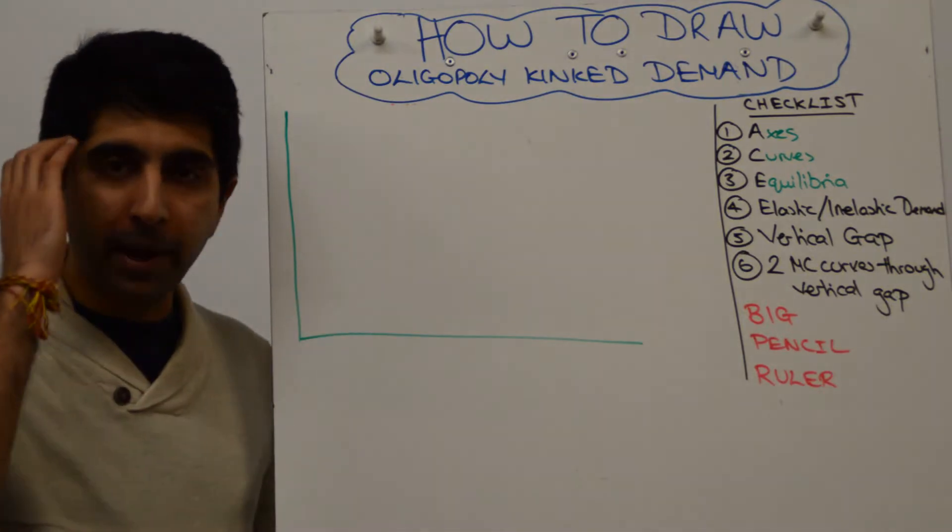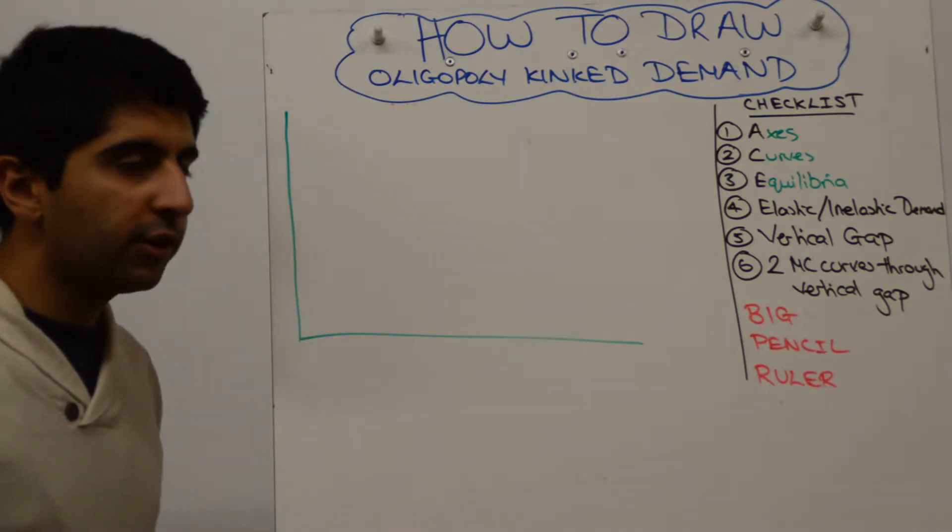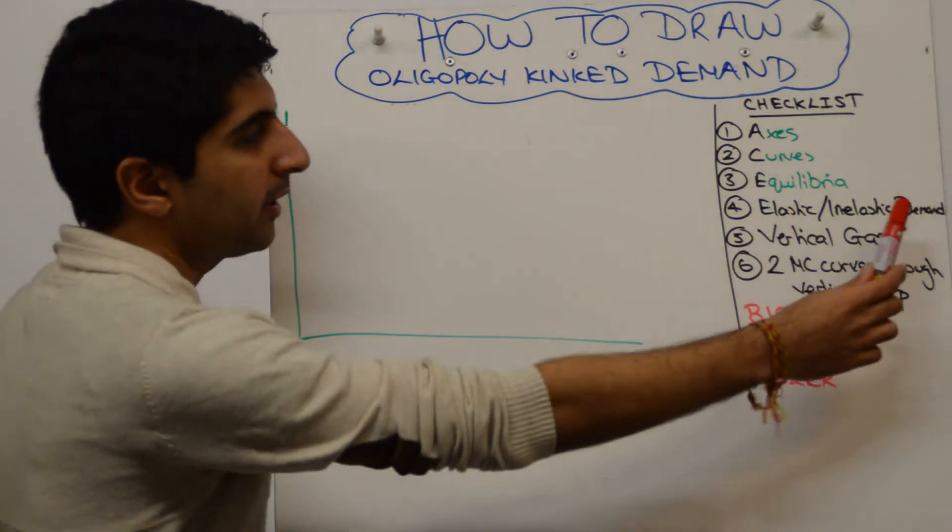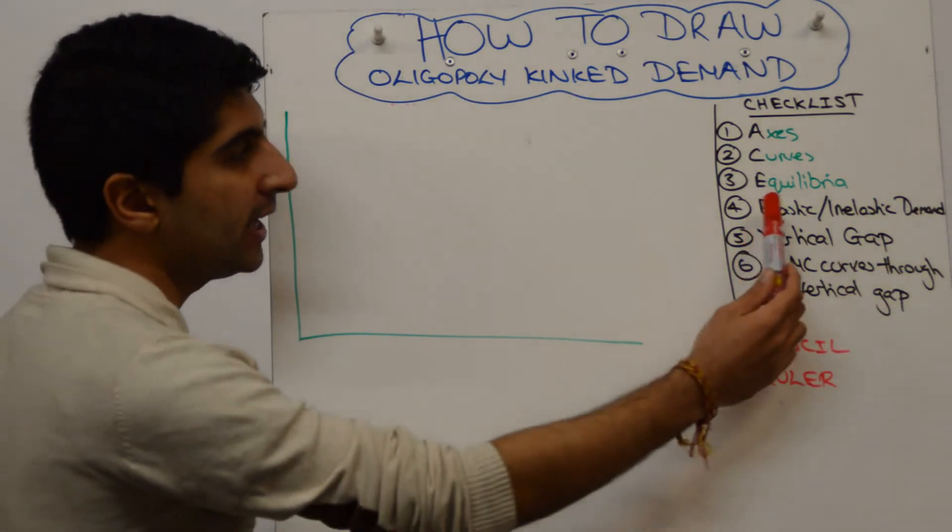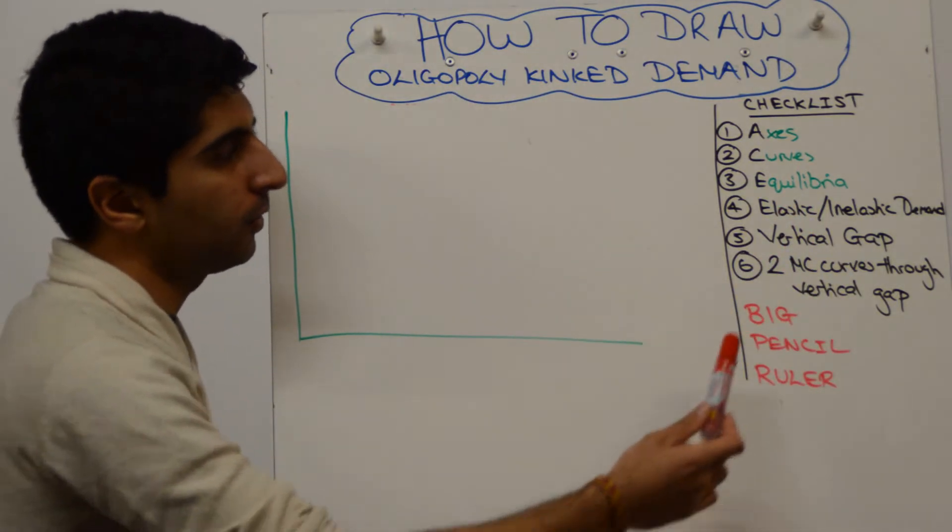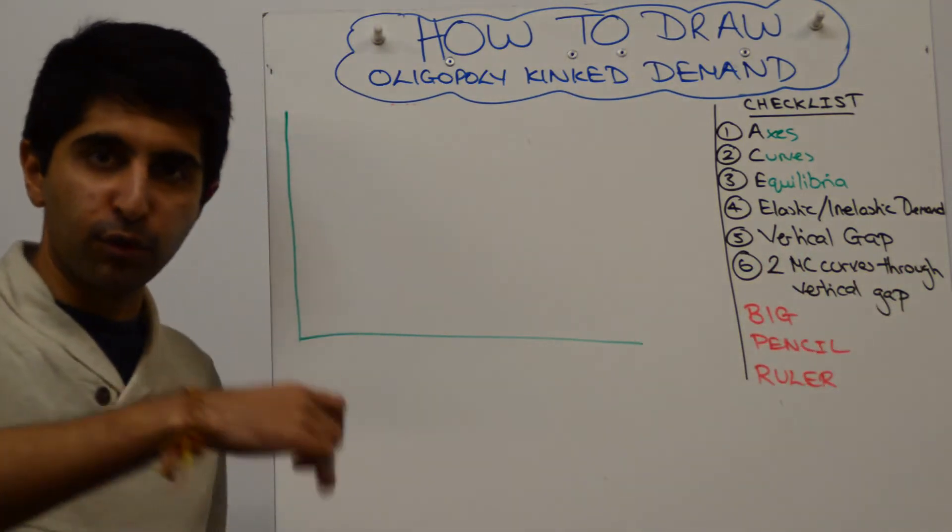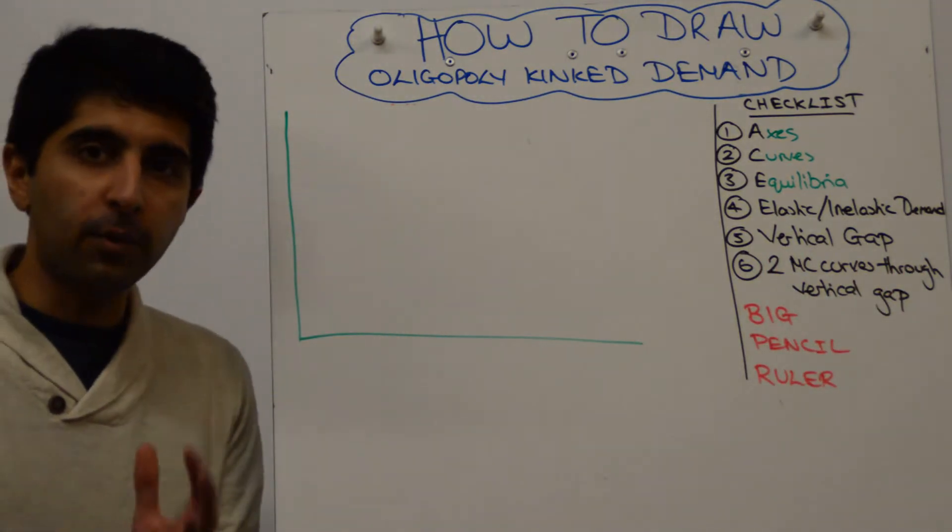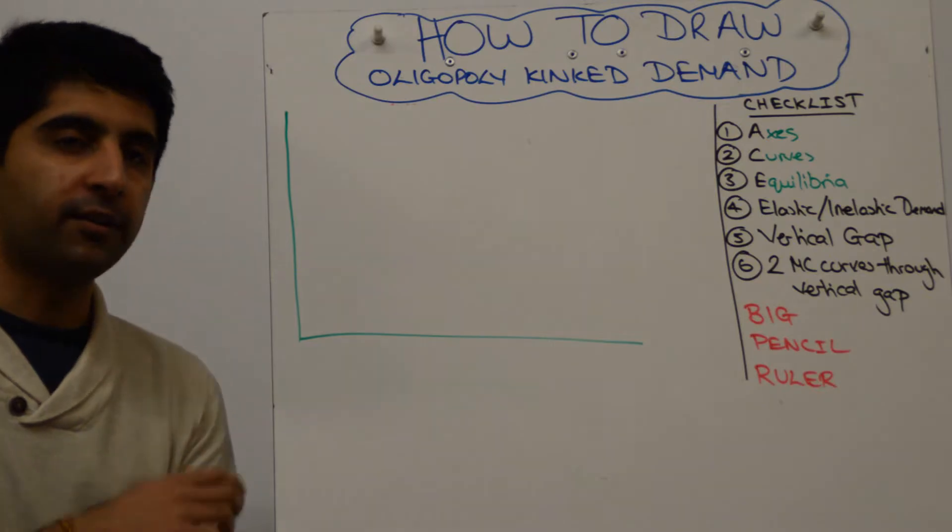Well, before we construct it, it's worth going back to a mental checklist. What are you trying to show? You're trying to show a demand curve or an average revenue curve with an elastic portion and an inelastic portion, a vertical gap in the MR curve that you're going to draw, and then two MC curves going through that vertical gap. All of this will help you show the idea of rigid prices on a diagram.